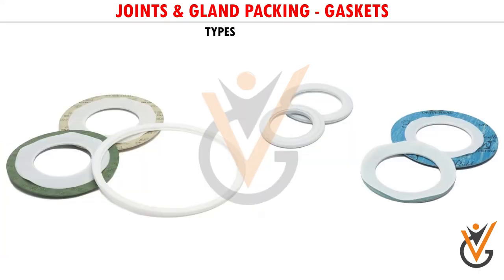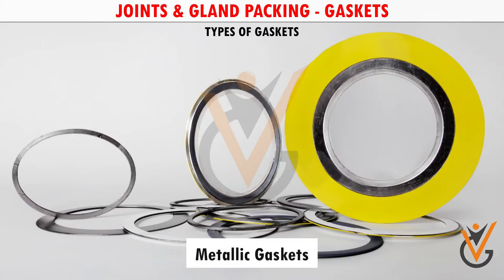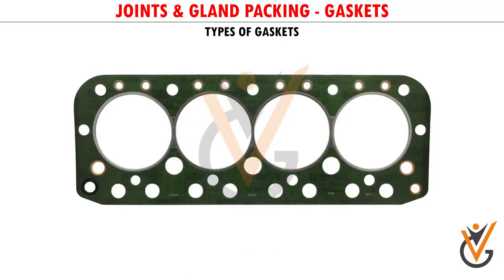Types of Gaskets. There are three types of gaskets used in process piping: non-metallic gaskets, metallic gaskets, and composite gaskets.